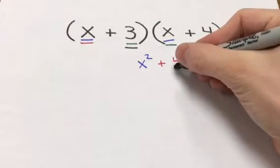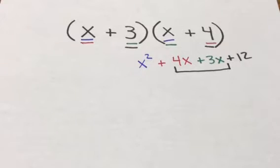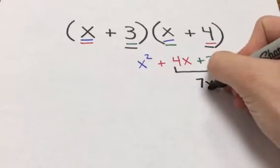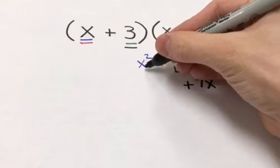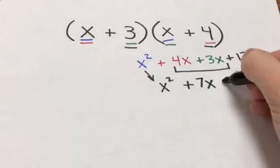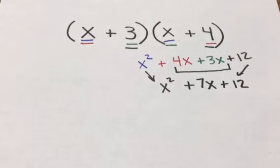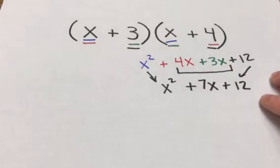The final step in any FOIL problem is to combine like terms. In the middle we have 4x and 3x, which share the same variable and exponent, so we add the coefficients: 4 plus 3 is 7, giving us 7x. Bringing everything together, we get X squared plus 7x plus 12 — a trinomial with three terms, which is the result of multiplying the two binomials (X + 3) and (X + 4).